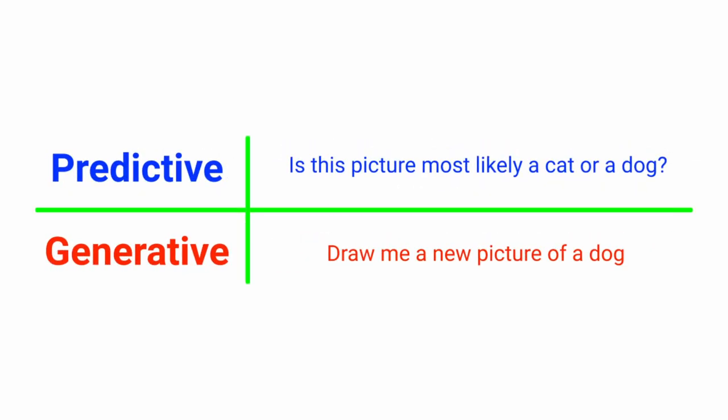For example, if we showed both models pictures of cats or dogs, we might ask the predictive model: is this picture most likely a cat or a dog? Whereas we might ask the generative model to draw me a picture of a new dog.